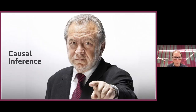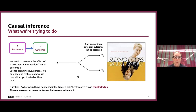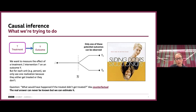Moving on to causal inference. What we're trying to do is assess the effectiveness of a treatment T on an outcome Y. Unfortunately, for each person or unit in our study we only get to see one realisation — they either get treated or they don't. It's unlike the film Sliding Doors: in causal inference you never get to know what happens if the treated didn't get treated. That's the idea of the counterfactual — the thing that didn't happen — and we can try our best to estimate it.